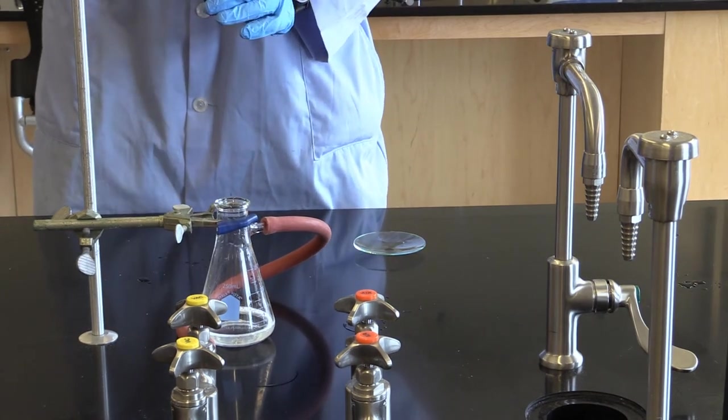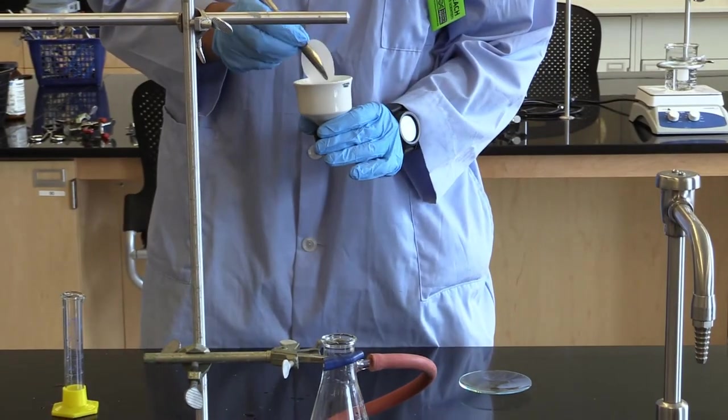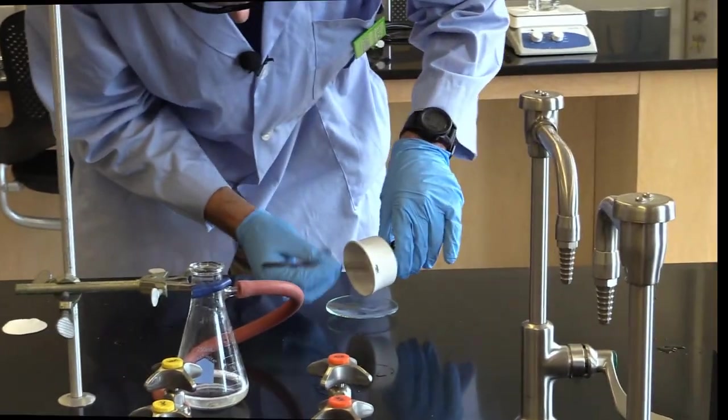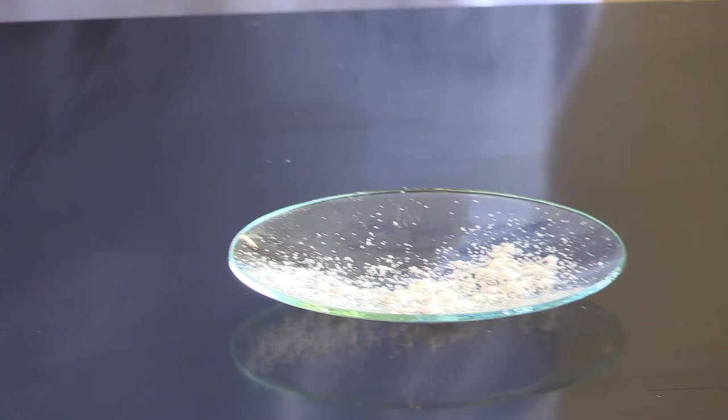Now we get to scrape the aspirin off the filter paper and onto a pre-weighed watch glass. I have successfully scraped all the aspirin out of the Buchner funnel. I can now take that mass and then calculate my percent recovery.